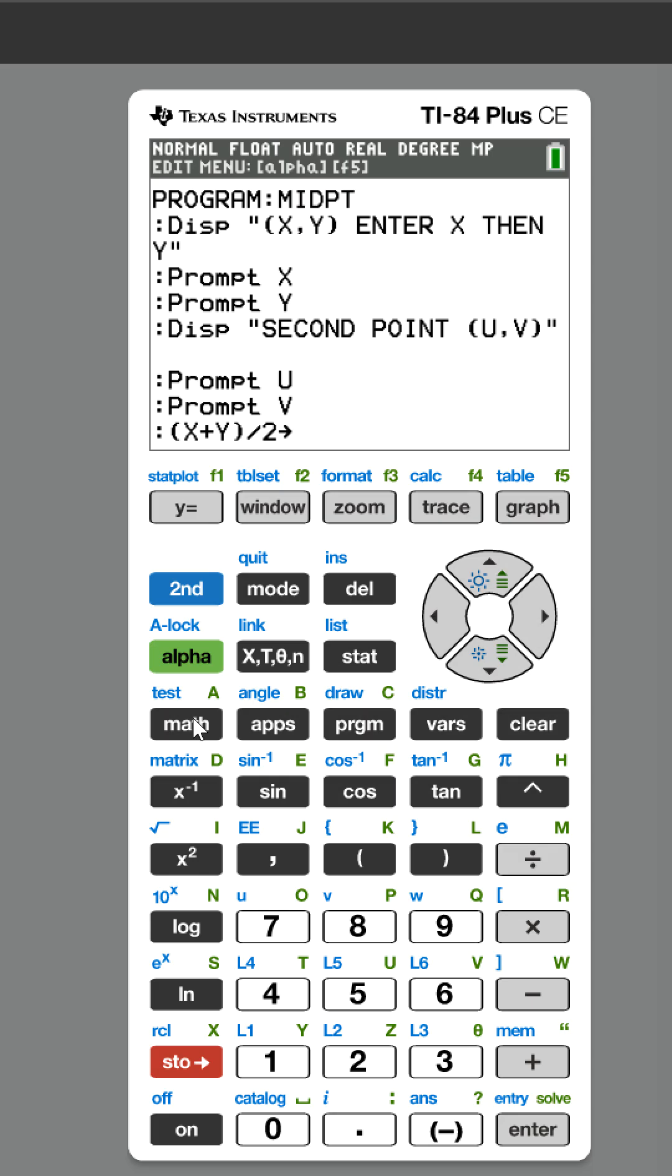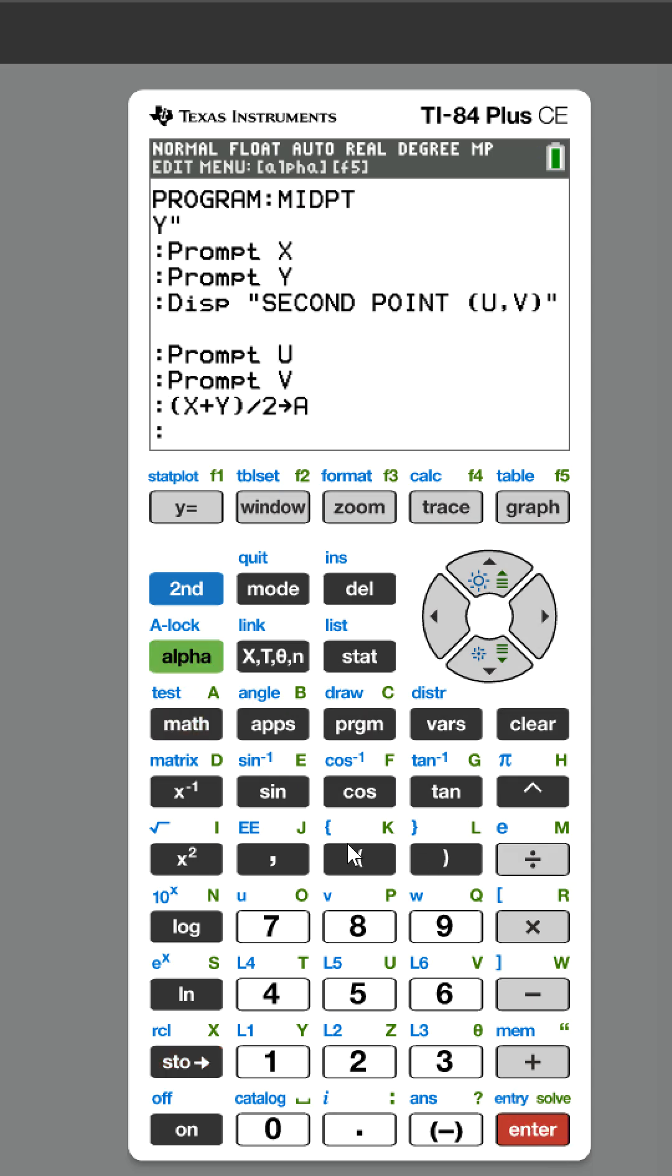We're gonna store that to A. We do the same thing with the Y coordinates - oh that shouldn't be X plus Y, that should be X plus U. That's what happens when I'm talking and thinking at the same time. Now we're gonna ask for the Y coordinates, so Y plus V divided by two.